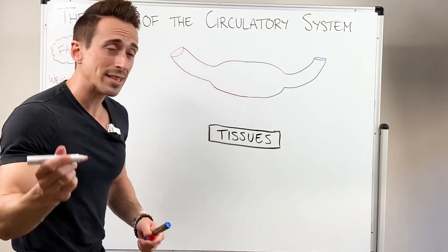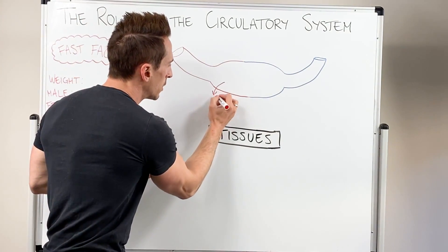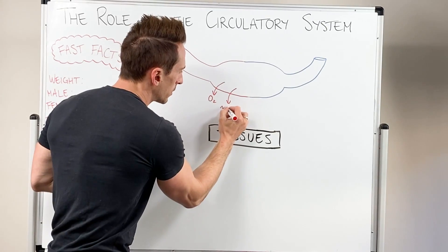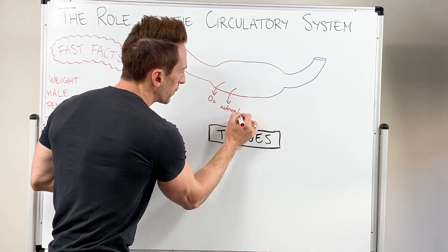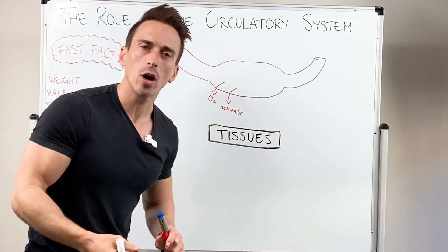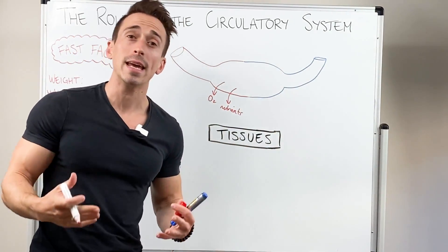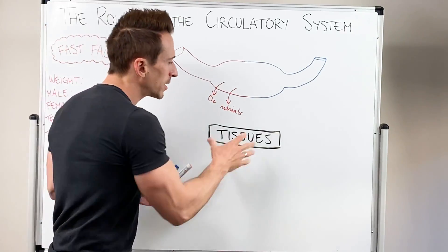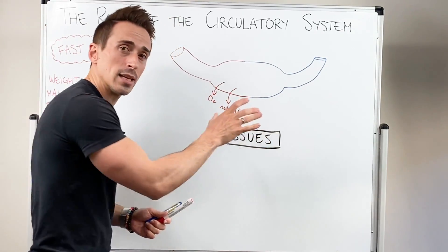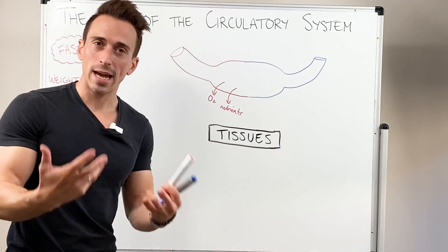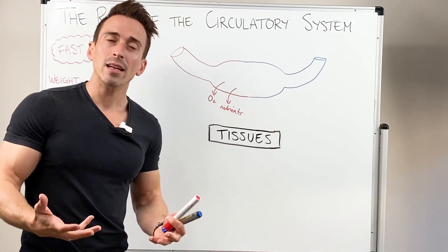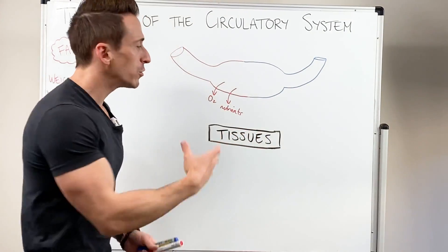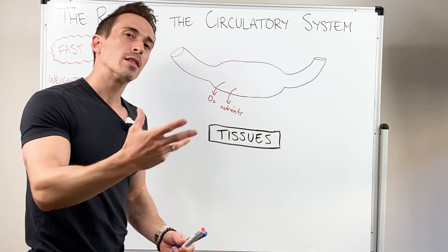Now what's the primary role of the circulatory system? Well simply put it's to deliver things such as oxygen and nutrients to the tissues of our body. Now nutrients can include glucose, fatty acids, amino acids for example, and what the tissues do is they take these and they utilise them to produce energy and as the building blocks for growth and development.